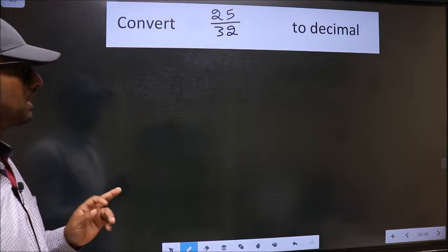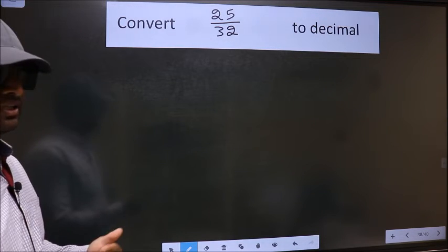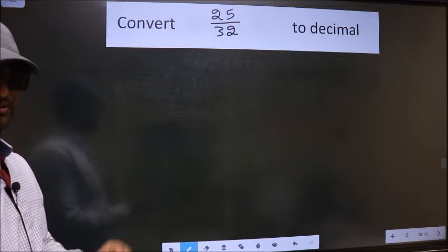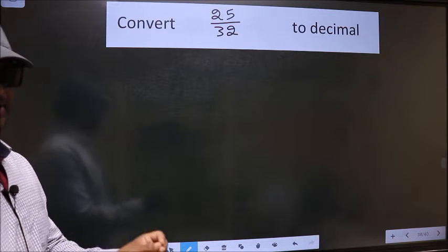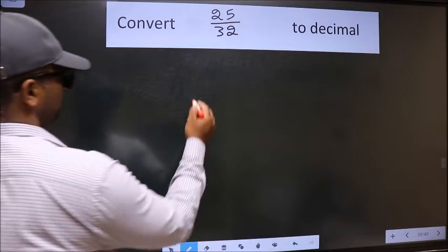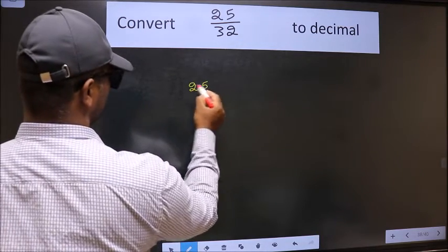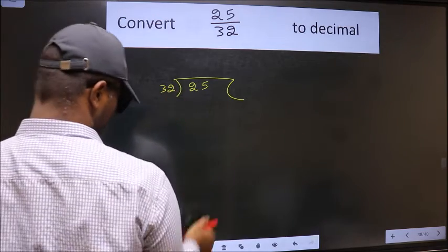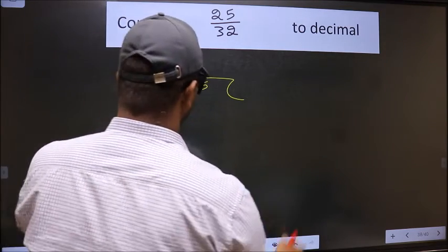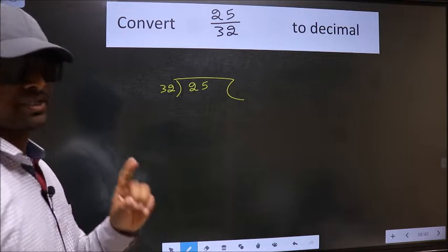Convert 25 by 32 to decimal. To convert to decimal, we should divide. And to divide, we should frame it in this way: 25 here, 32 here. This is your step 1.